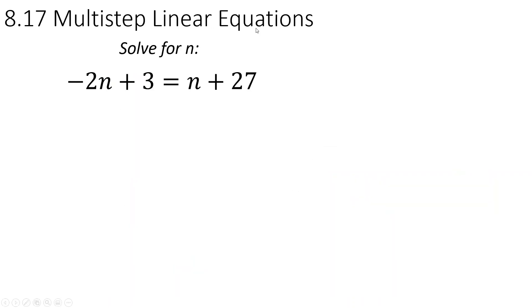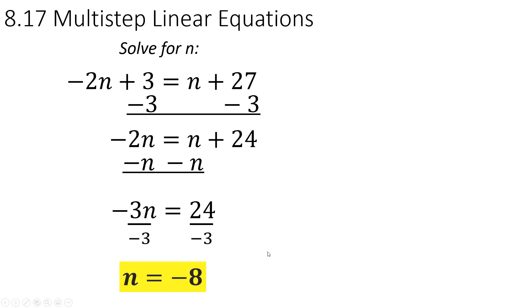Multi-step linear equations. In this problem, you want to get all your n's on one side. You want to get your constants on the other side. So, for this, I'm going to go ahead and subtract 3 from both sides. And you're going to end up getting the 3's cancel out, so you're left with negative 2n on the left. And then you're subtracting the 3 and you get 24. Now, I'm going to take away that n from both sides. And you get negative 2n minus n. Don't forget your integer rules. You're going to get negative 3n. These two n's cancelled out. So, now we divide by negative 3. We end up getting negative 8.